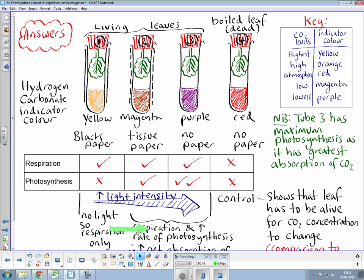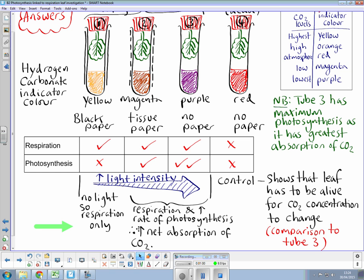Because of that, while respiration is still occurring, the rate of photosynthesis is going to increase between tubes two and three. Consequently, the net absorption of CO2 will go up from here to here, and you can see that with the color change.